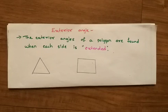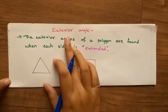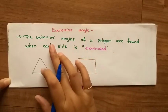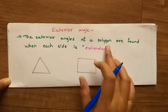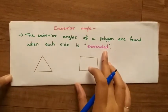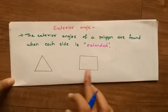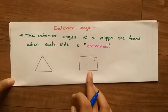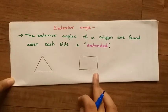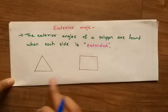In the last class we studied about axis size 4.1, so today we shall learn exterior angles. The exterior angles of a polygon are found when each side is extended. Here are two examples of polygons: a triangle and a rectangle.